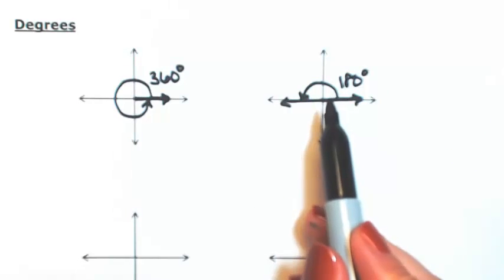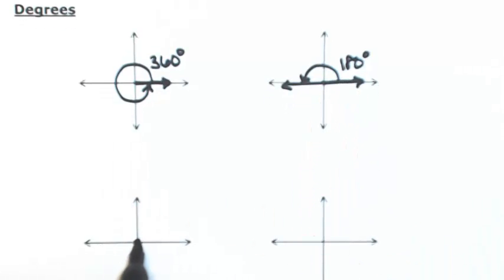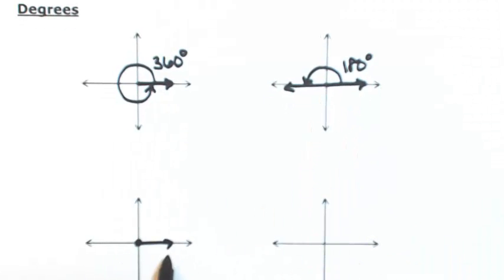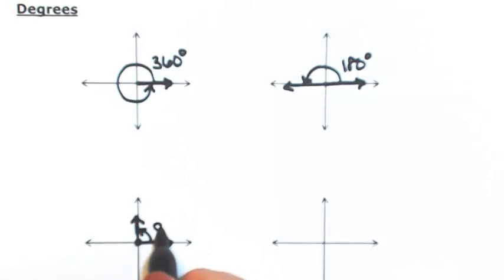So now let me go maybe half of the 180, again still starting from the initial side, and just going a quarter of the way, then this would be 90 degrees.